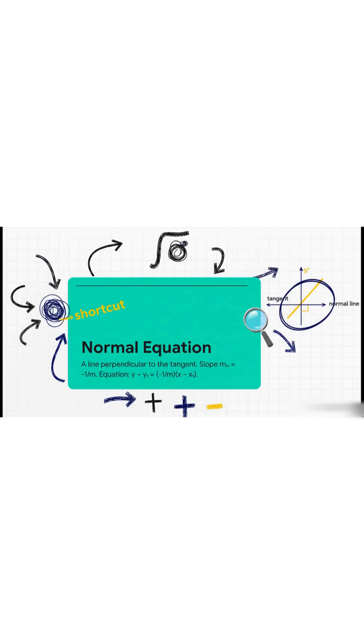And what about the normal line? Well, that's just the line that's perpendicular to the tangent. So what do you do with the slope? You just flip it and reverse the sign. The negative reciprocal. Same formula, different slope. That's it.